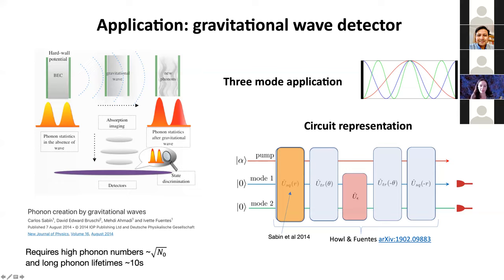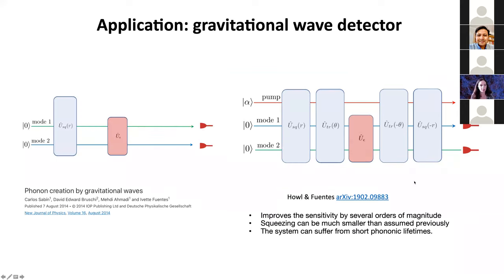By adding other transformations and finding a more clever initial state, you can overcome these limitations and still have good sensitivities despite much shorter phonon lifetimes. We wrote a paper describing a three-mode application of frequency interferometry using the ground state of the BEC described by the Gross-Pitaevski equation as the bulk or pump in a coherent state. Phonon modes are then excited by changing the box size, creating a two-mode squeezed state, and applying a transformation called the tritter — a beam splitter between three states — which creates a very sensitive state. This improves sensitivities by many orders of magnitude and allows much smaller squeezing and shorter phonon lifetimes.